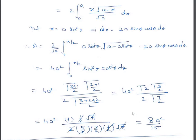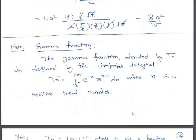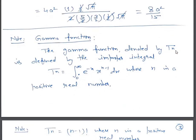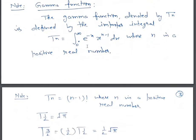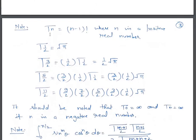Now let us briefly discuss what is meant by the gamma function. The gamma function, denoted Γ(n), is defined by the improper integral Γ(n) = ∫₀^∞ e^{-x} · x^{n-1} dx, where n is a positive real number. We shall study beta and gamma functions in a separate chapter later on. For now, remember that Γ(n) = (n-1)! where n is a positive integer.